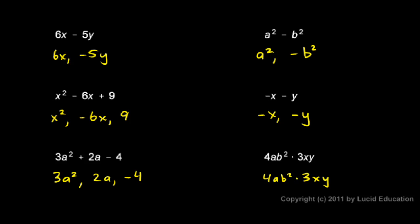There aren't two terms, even though it's written in two pieces like that. They're still multiplied right there, and everything here is multiplied. This is 4 times a times b squared times 3 times x times y.